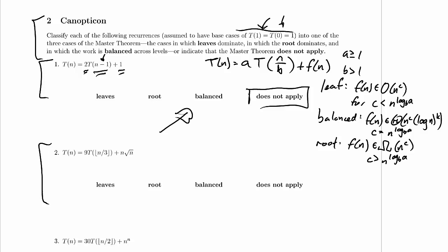So let's see if the master theorem applies. Is this of the form T(n) = A, here's our A, times T(n/B)?